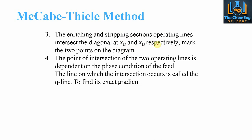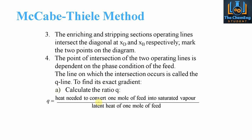Step four: the point of intersection of the two operating lines depends on the phase condition of the feed, and the line at which this intersection occurs is known as the Q line. The Q line gradient is found by the equation: the heat needed to convert one mole of feed into saturated vapour, divided by the latent heat of one mole of feed. Saturated vapour implies pure vapour with no liquid in the system. Latent heat is the energy needed for the phase change from liquid to vapour, which is why we divide by latent heat and not sensible heat.